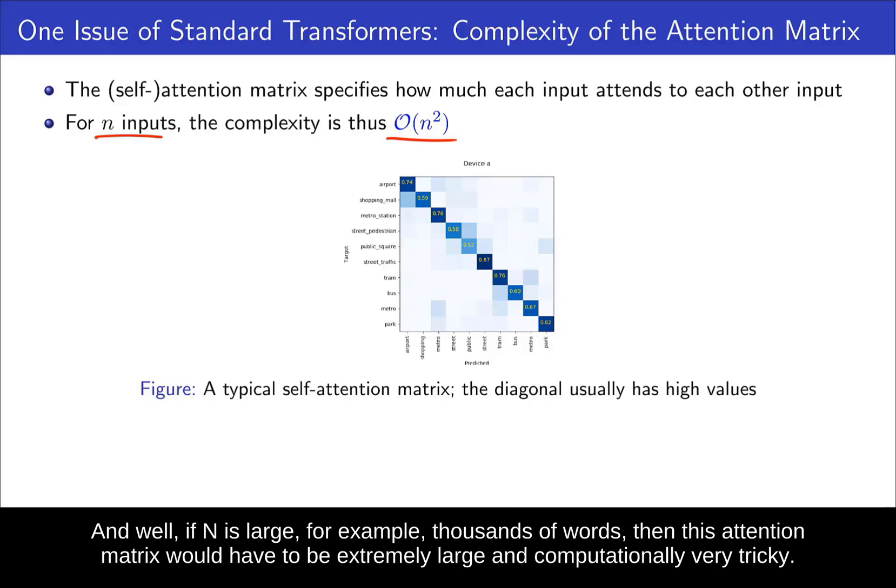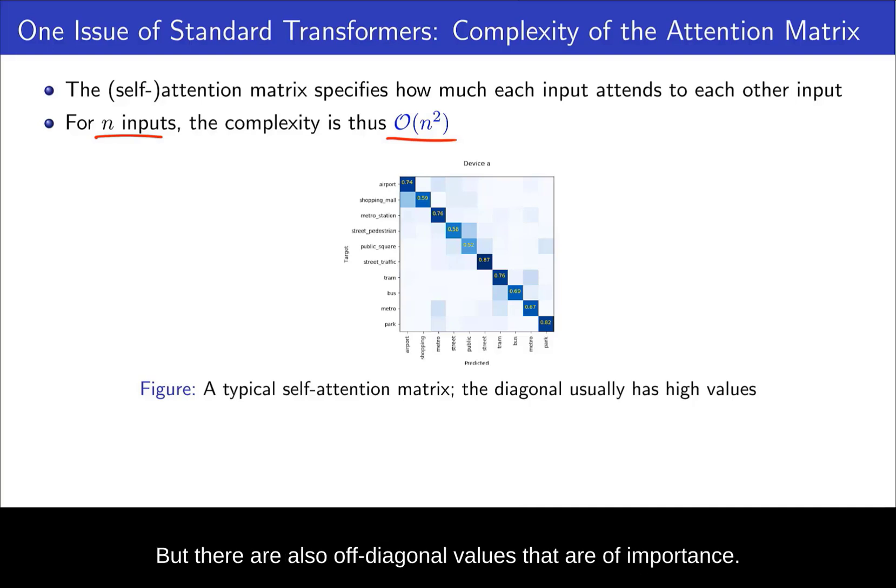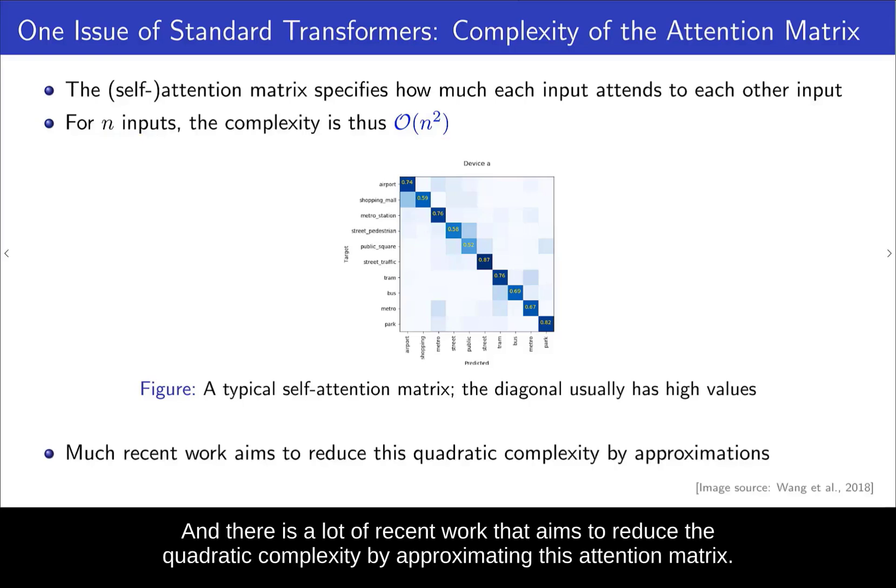then this attention matrix would have to be extremely large and computationally very tricky. Now this attention matrix typically has large values on the diagonal, because typically our embeddings don't change too much from one step to the next. But there are also off-diagonal values that are of importance. And there is a lot of recent work that aims to reduce the quadratic complexity by approximating this attention matrix.